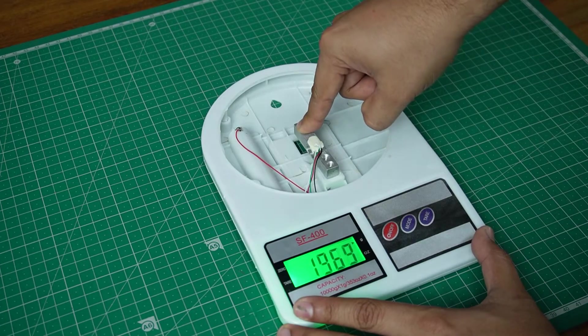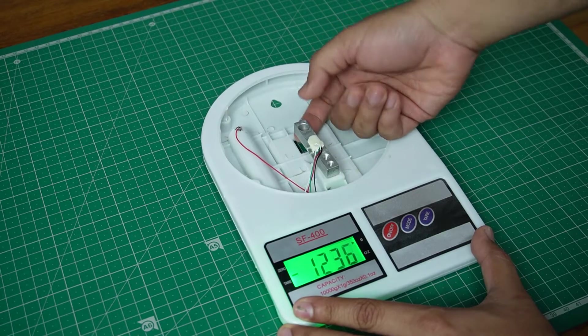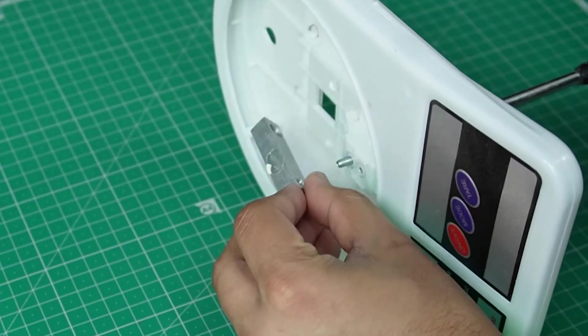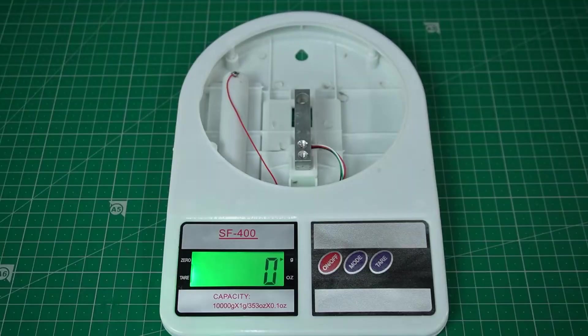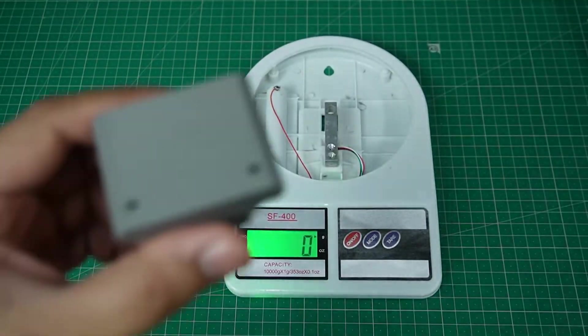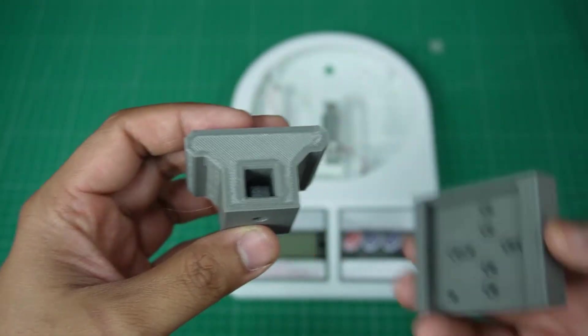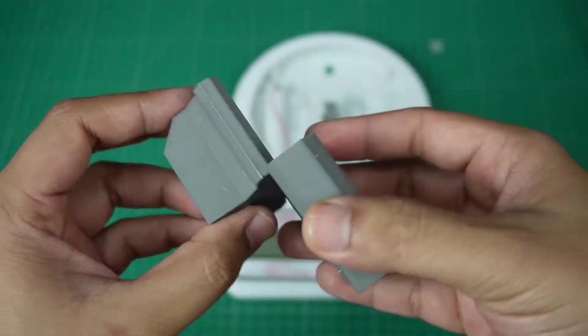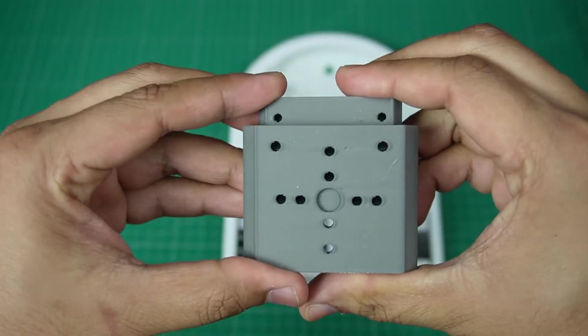I inverted the load cell to get a positive reading on the display. The mount has two parts. The bottom part is fixed on the load cell while the top part slides on the mount to easily swap the motors.